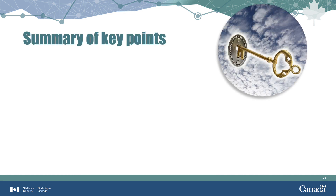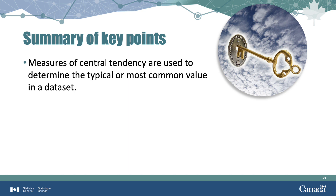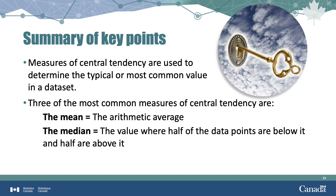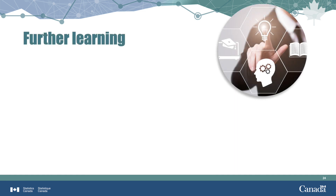To summarize: central tendency is the formal term for determining the center, or balance point, of a dataset. We looked at three ways to calculate it. The mean, or average, is the most well-known, but extreme values can influence it. The median, or middle point where half the values are below and half above, is less likely to be influenced by extreme values. The mode is the most common value; remember that a dataset can have more than one mode or none at all. To find out more about the spread or dispersion of data, check out the video called Exploring Measures of Dispersion.